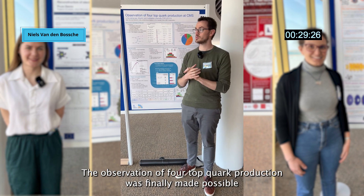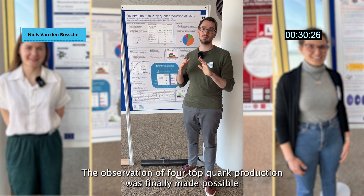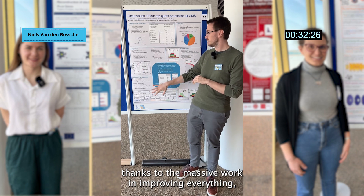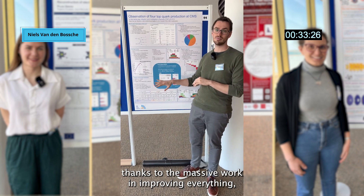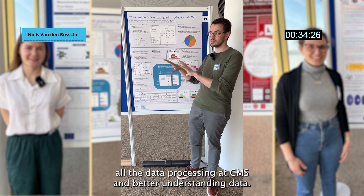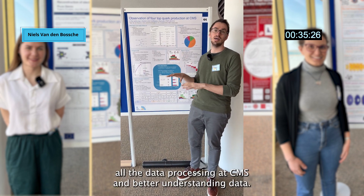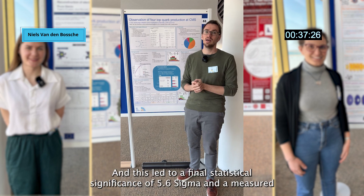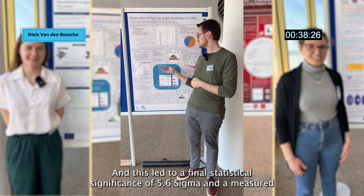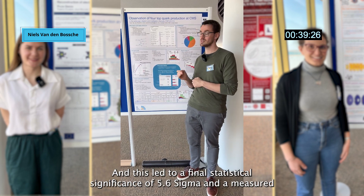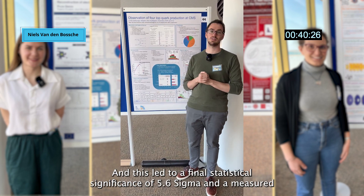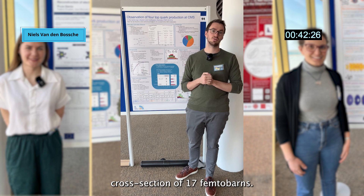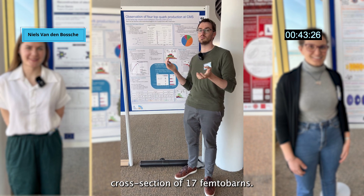The observation of 4-top quark production was finally made possible thanks to massive improvements in data processing at CMS and better understanding of the data. This led to a final statistical significance of 5.6 sigma and a measured cross-section of 17 femtobarns.